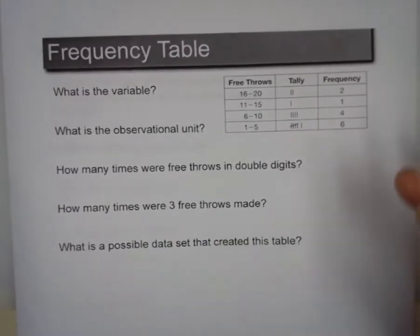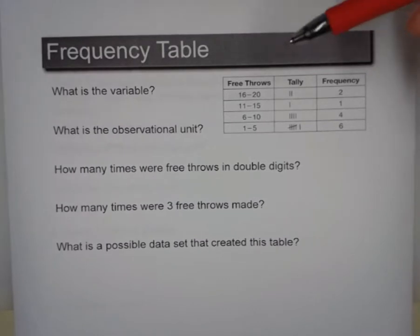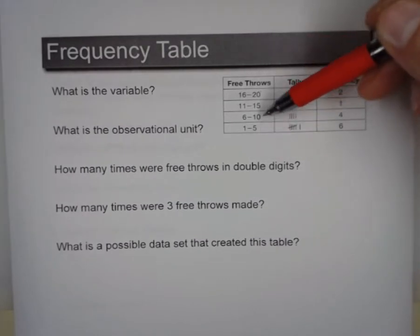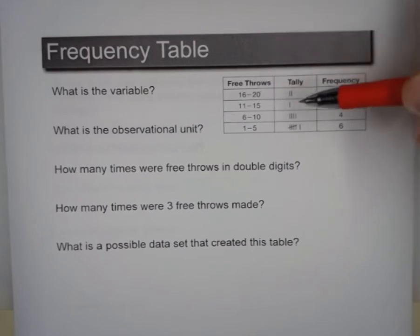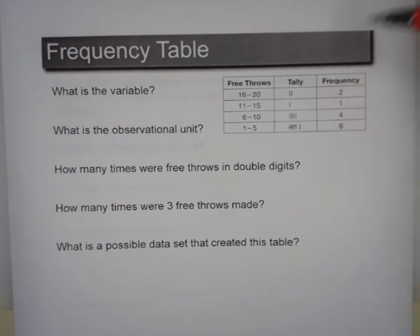So if we take a look here, we've got this frequency table, and we have these intervals: 1 to 5, 6 to 10, 11 to 15, 16 to 20. And we have these tally marks: 2 here, 1 here, 4 here, 6 here.